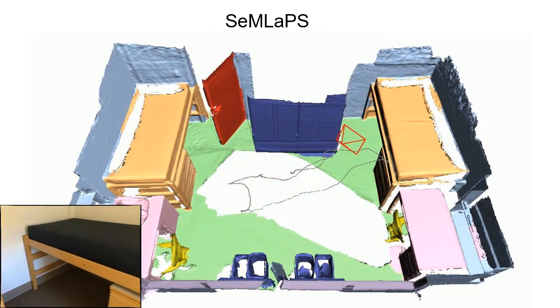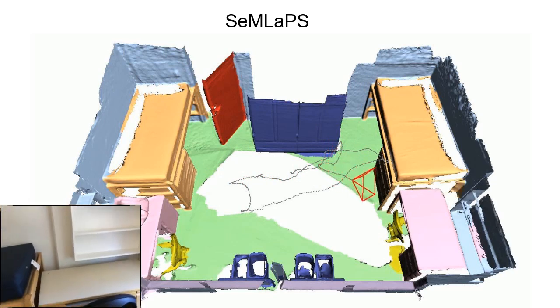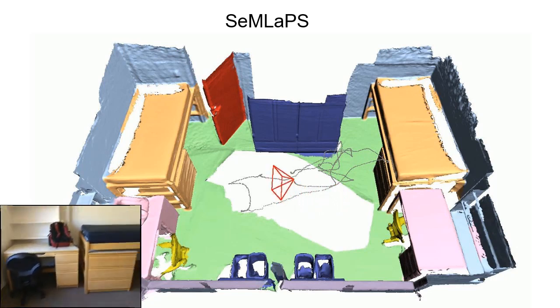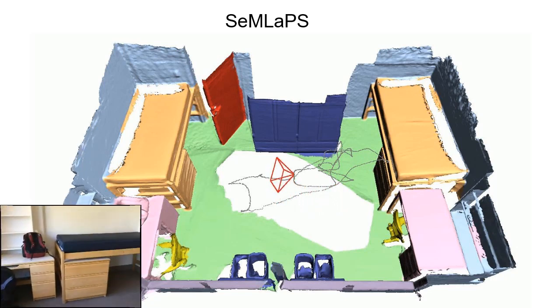Our experiments show that Semlapse achieves state-of-the-art accuracy among real-time 2D-3D networks and shows better cross-sensor generalization capabilities than methods based on 3D-only networks.